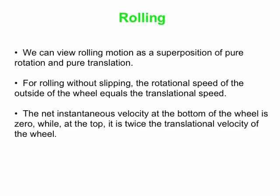In particular, at the very bottom of the wheel, the net instantaneous velocity when the point on the wheel touches the ground is zero. And at the very top, the point is going twice the translational velocity of the center of the wheel, which has only pure translational velocity. We'll look at that in some detail.